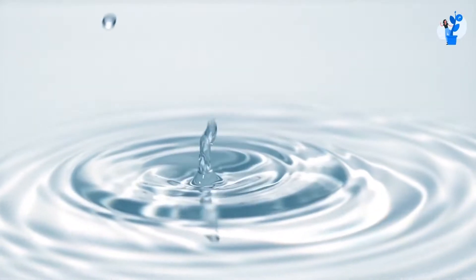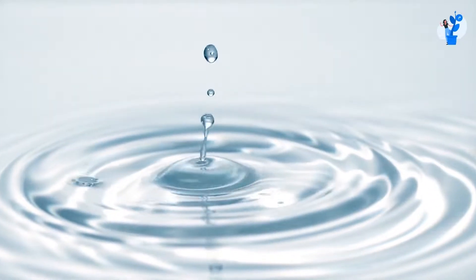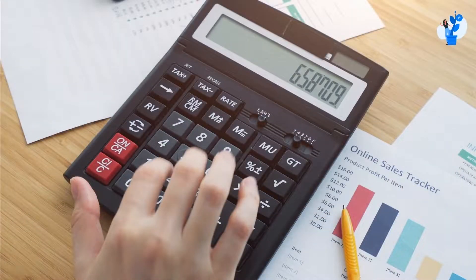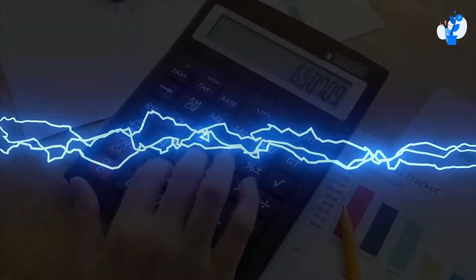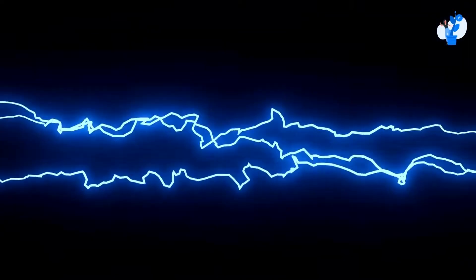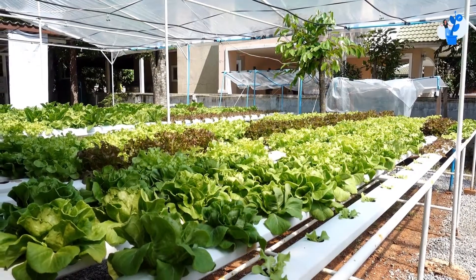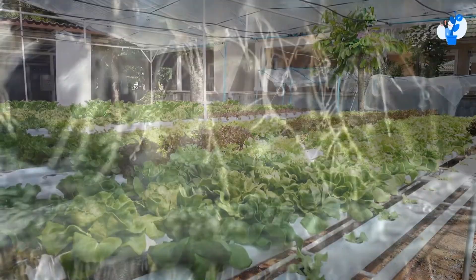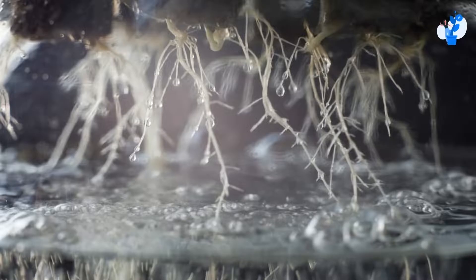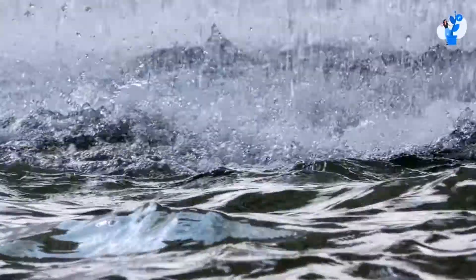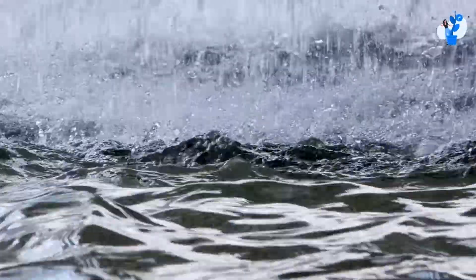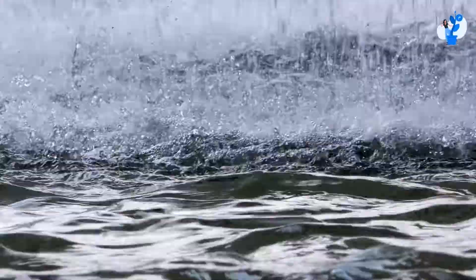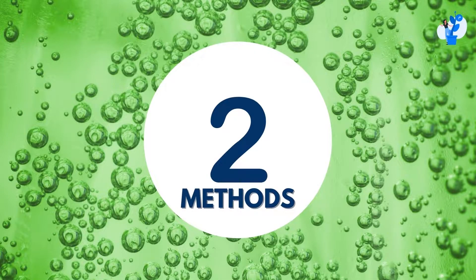In our hydroponic farm, we have created the second method — oxygenation by air dropping. Because of this method, our costing reduces and we don't require electricity to run it. In a general system, you can do modifications and create air dropping. This is the need for oxygenation in your hydroponic system.